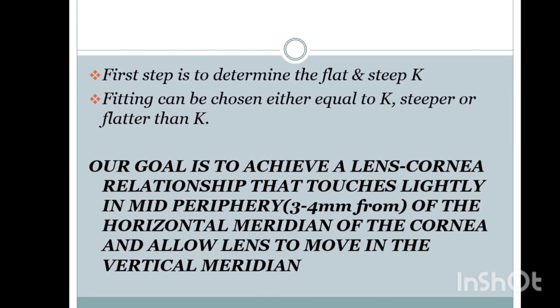The first step is to determine the flat and steep K. The K reading which is smaller is the flat K; if it is larger, that is the steep K. For example, if K1 horizontal is 44 and vertical is 48, then 44 is the flat K and 48 diopters is the steep K. Fitting can be chosen either equal to K, steeper, or flatter than K.